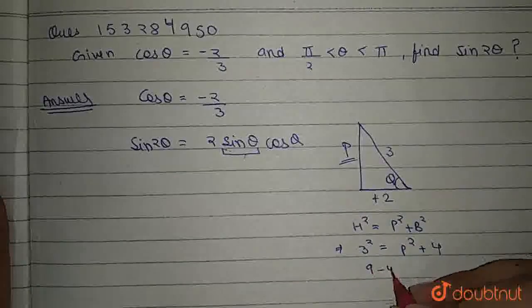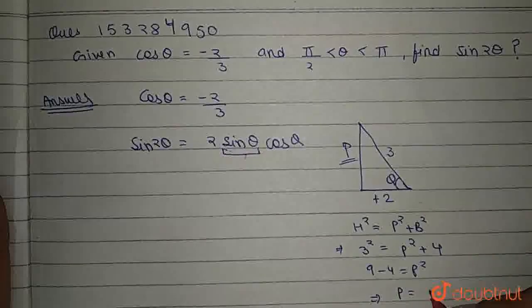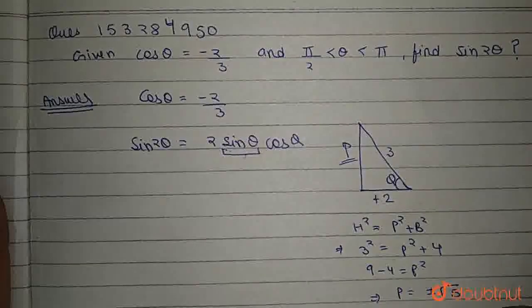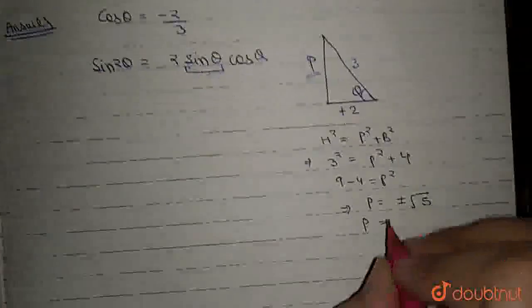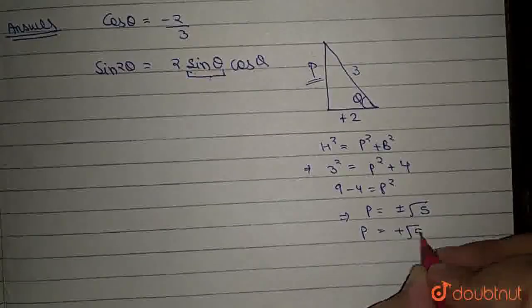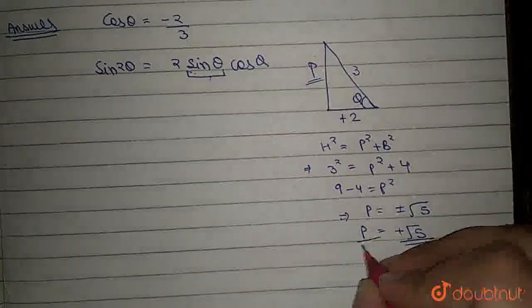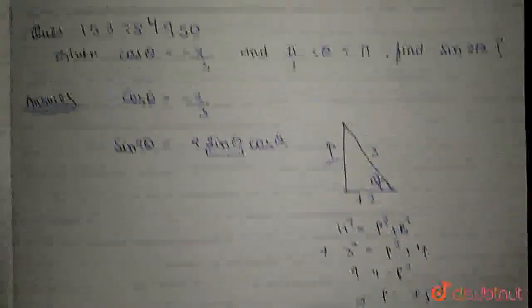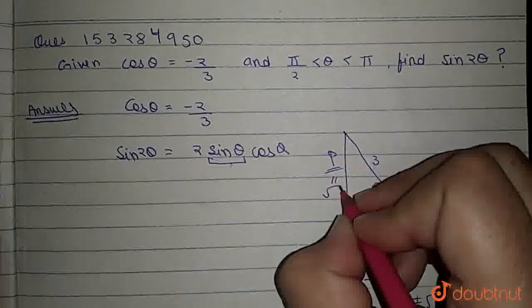This implies 9 - 4 = p², and hence we get the value of p as ±√5. But we take the value of p to be +√5 since it is a length and hence it is positive. So, we get the value of p as √5.